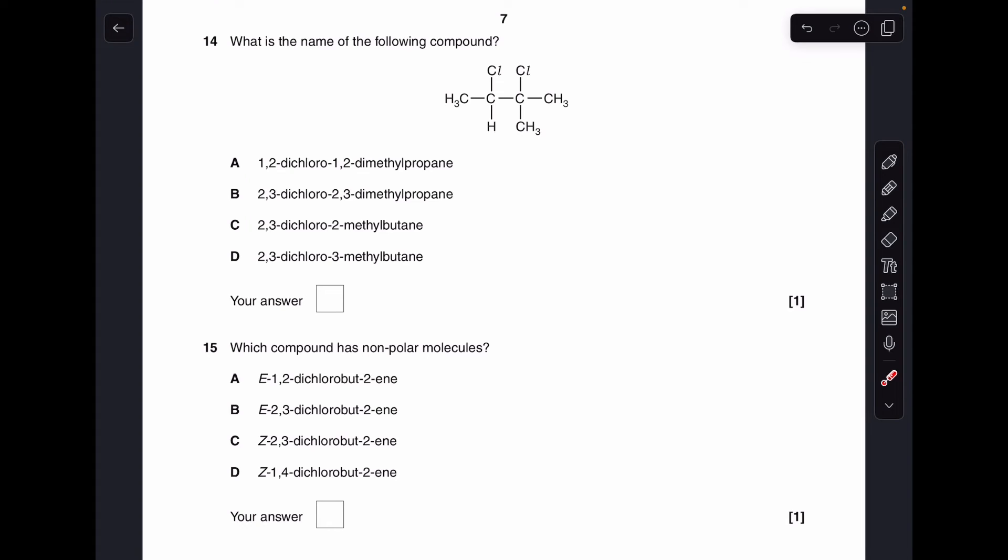Number 14. The first thing I'm doing is counting the longest continuous carbon chain. And it's the one right down the middle. One, two, three, four. So this is going to be some form of butane. So we can get rid of A and B because they're both propanes. You'll notice the remaining options are both 2,3-dichloros. So it's all about the position of the methyl group. So the rule is we've got to use the lowest number. So C must be the answer, 2,3-dichloro-2-methylbutane.